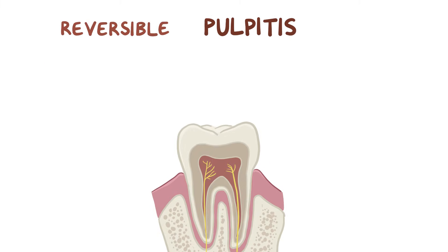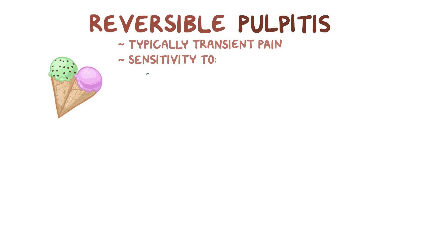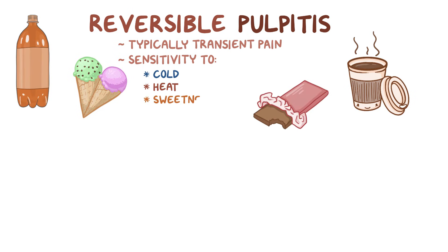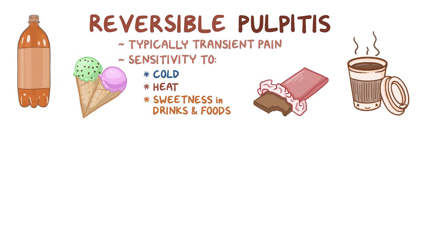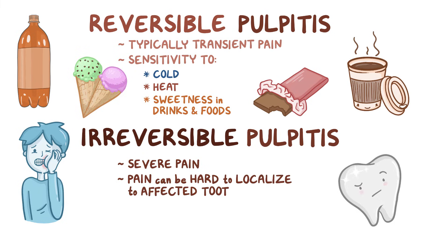In reversible pulpitis, there's typically transient pain and sensitivity to things like cold, heat, or even sweetness in drinks and food. In irreversible pulpitis, there can be severe pain, and sometimes that pain can be hard to localize to the exact tooth that's affected.